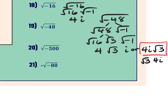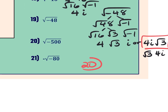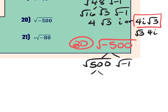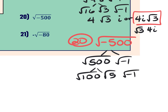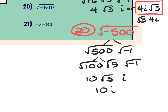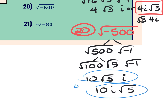For example 20, the square root of negative 500: I do 500 times negative 1, then start breaking the 500 down. I'll use 5 and 100, because 100 is the biggest perfect square that's a factor of 500. Square root of 100 is 10, the 5 stays underneath, and square root of negative 1 is i. So the answer is 10i radical 5. Any equivalent form is acceptable.